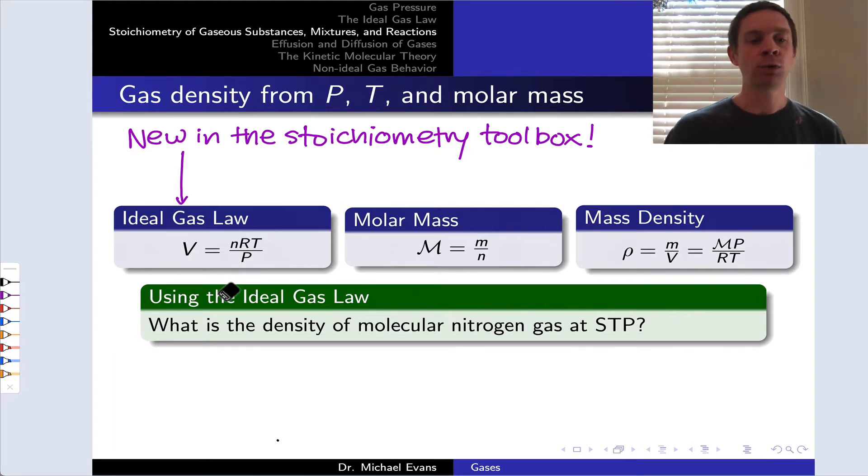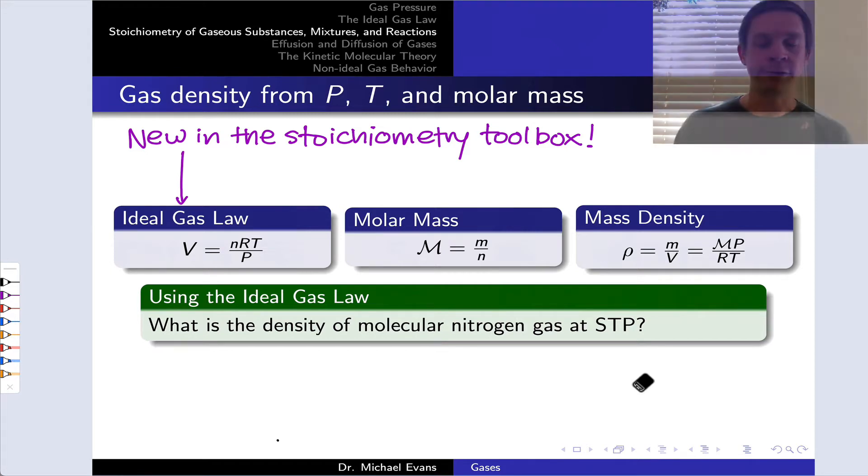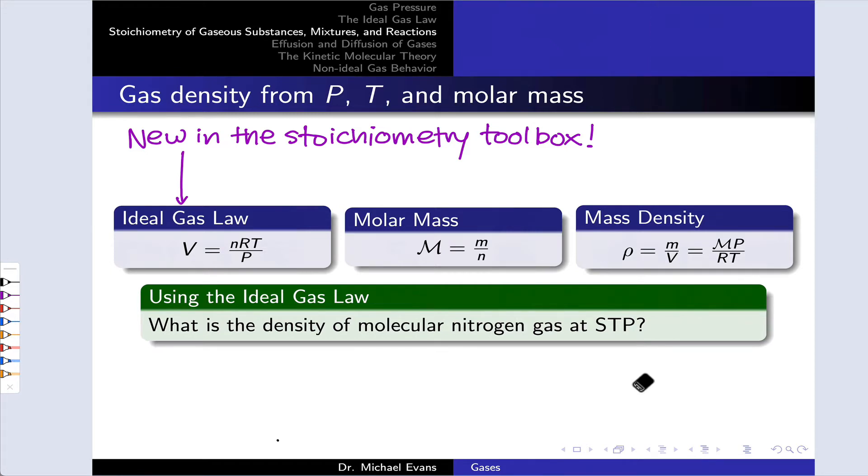To demonstrate this, I want to work this example problem, simply asking what is the density of molecular nitrogen gas, which is N2 gas, at standard temperature and pressure. Let's diagram out the process as we do with stoichiometry problems before we dig in.